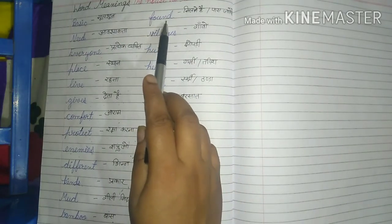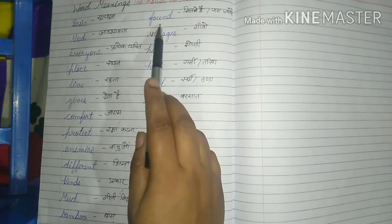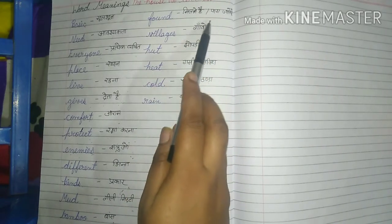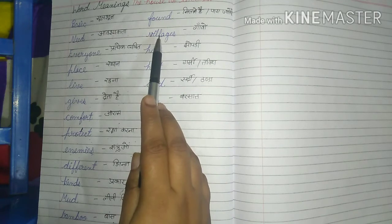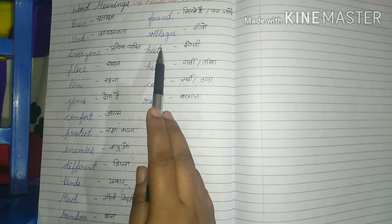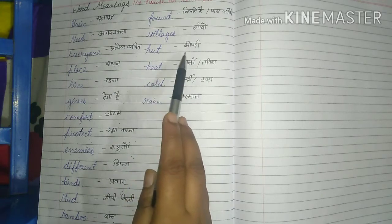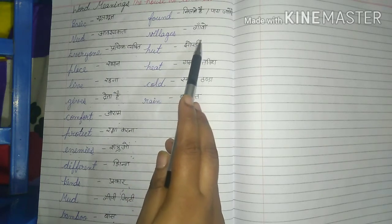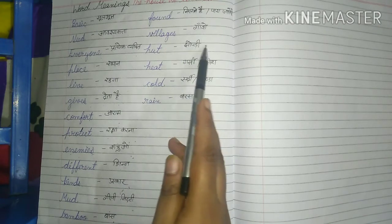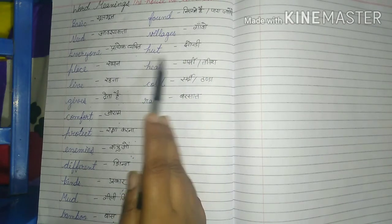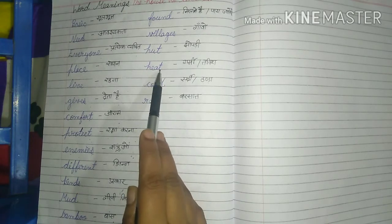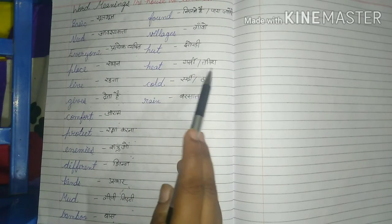Next: VILLAGES — V-I-L-L-A-G-E-S. Villages means 'gaon' — many villages together. Next: HUT — H-U-T. Hut means 'jhompdi' (a small hut). Next: HEAT — H-E-A-T. Heat means 'garmi ya tapish' (heat/warmth) — when the sun is very strong, we feel garmi.